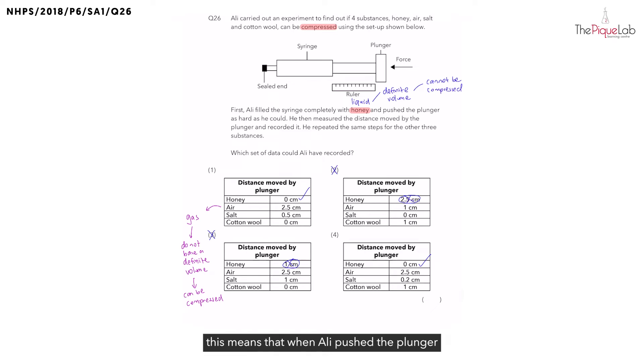Now, if gases can be compressed, this means that when Ali pushed the plunger as hard as he could, what would happen to the distance moved by the plunger? Would the plunger be able to move in? Yes, right? Which means the distance moved by the plunger should be 0 or more than 0. In this case, the distance moved by the plunger should be more than 0. And we see that in the table as well. Therefore, option 1 is still possible.